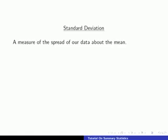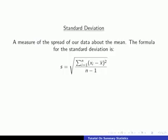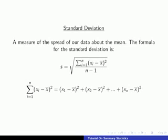Next we'll take a look at the standard deviation, which measures the spread of the data about the mean. The formula we need looks like this — the standard deviation is denoted by small s. The top line reads as the sum from i equals 1 to n of (xi minus x-bar) squared, where x-bar is shorthand for the mean. This means: take each observation minus the mean, square it, and sum all of those values. We divide by n minus 1 and then take the square root, and this gives us the standard deviation.